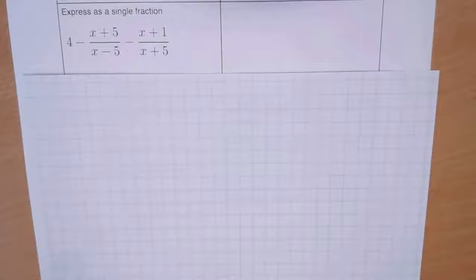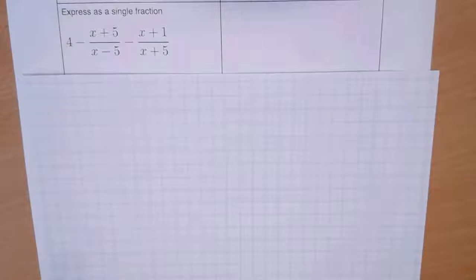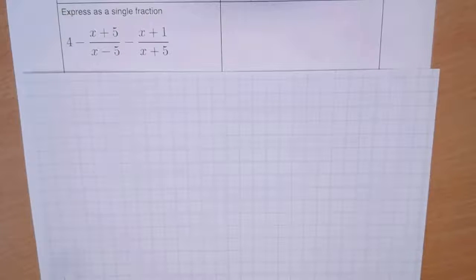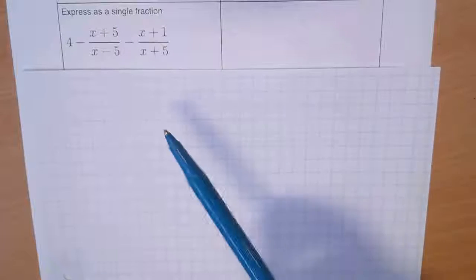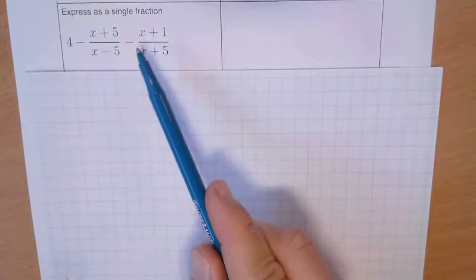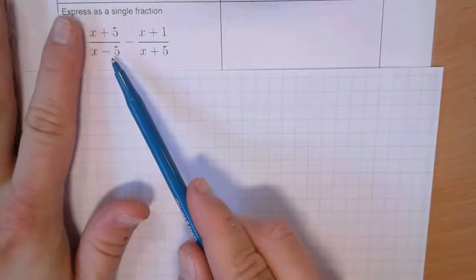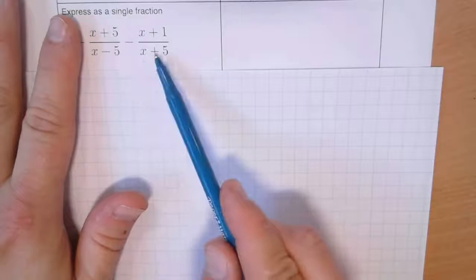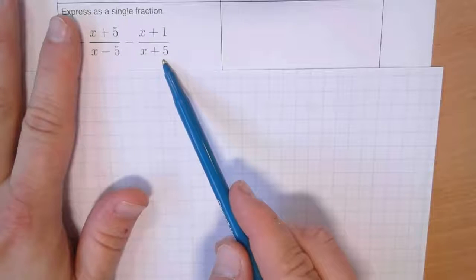Express as a single fraction. I've got 4 minus (x+5)/(x−1) minus (x+1)/(x+5). When adding and subtracting fractions, whether they're just numbers or complicated algebraic statements, I need to make sure I've got a common denominator. The common denominator here, ignoring the 4 for now, is going to be (x−5)(x+5).